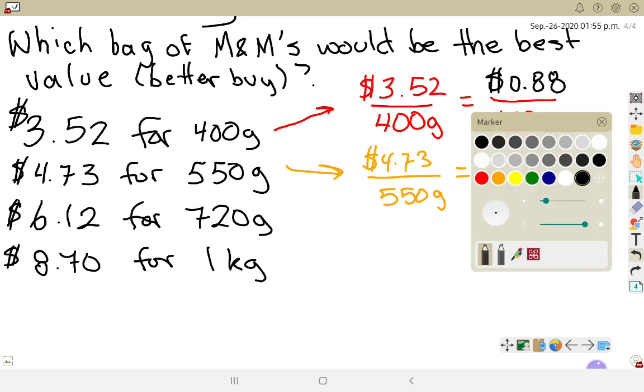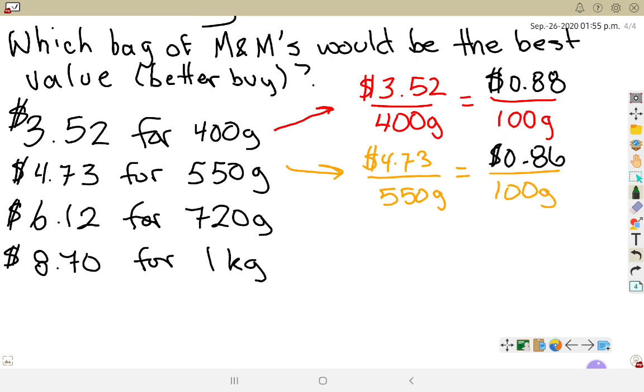That's what we're doing—trying to figure out which price is the cheapest. This one here is $6.12 for 720 grams, and we want to know what it is per 100 grams. 6.12 times 100, divided by 720, gives us $0.85 per 100 grams. Right now, bag number three is the cheapest.